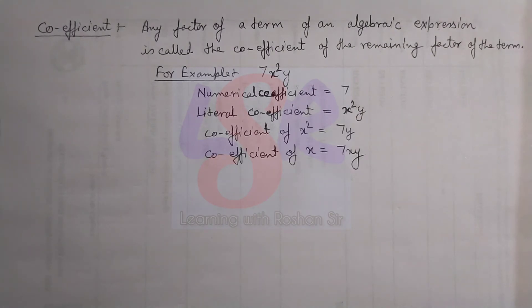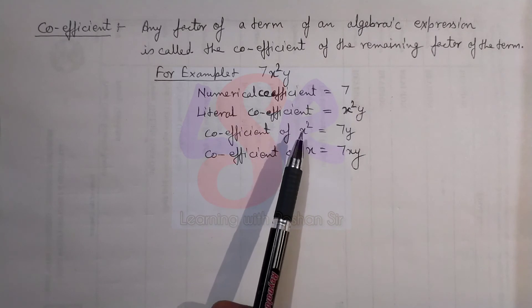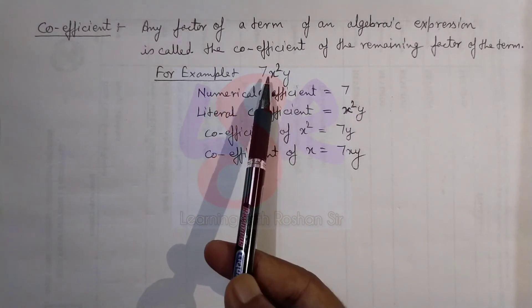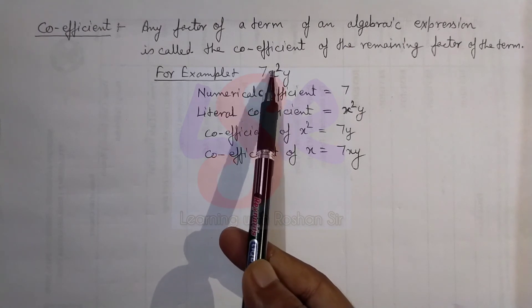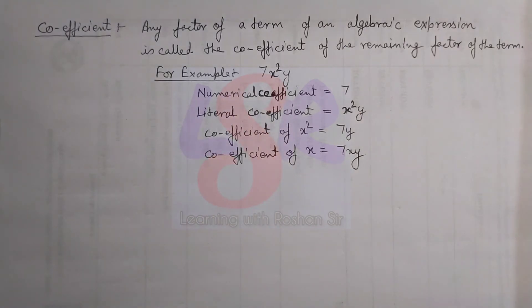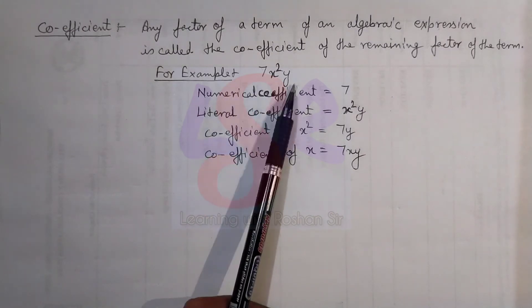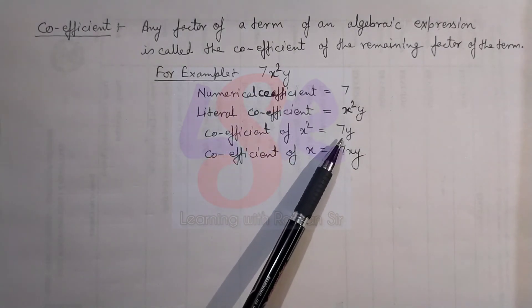Here we find the coefficient of x square. If you are finding the coefficient of x square, then you have to just remove x square from here and see what is left apart from x square. Here we are having 7 and y. So 7y is the coefficient of x square.